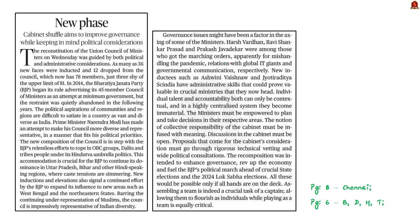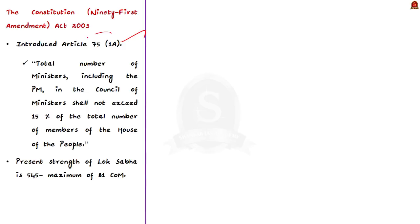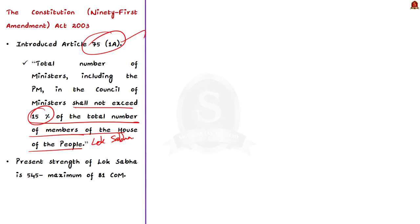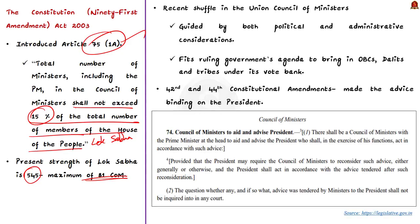Now let us take up this editorial regarding the recent cabinet shuffle at the center. After reshuffling, the central government now has 78 members — just 3 less than the upper limit of 81 that is legally sanctioned. Remember that the Constitution's 91st Amendment Act 2003 amended Article 75 and introduced a new clause — Clause 1A — stating that the total number of ministers including the Prime Minister shall not exceed 15% of the total number of members of the House of People, i.e., the Lok Sabha. At present, our Lok Sabha strength is 545, which roughly translates to a maximum of 81 council of ministers. The author says the recent reconstitution of the Council of Ministers was guided both politically and administratively.